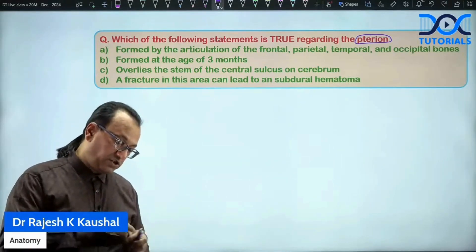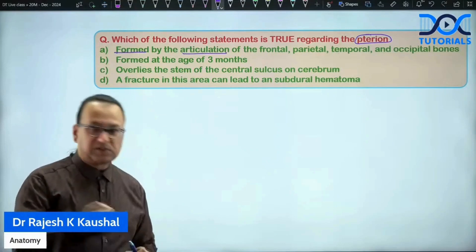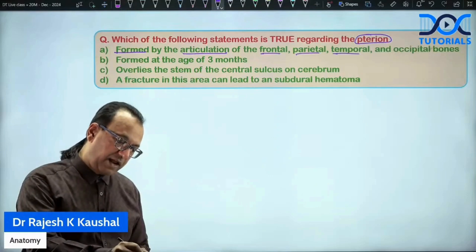So what do you think? Which of the following is true regarding the pterion? Is it formed by the articulation because it is H-shaped suture, four bones are there. Is it formed by frontal, parietal, temporal and occipital?